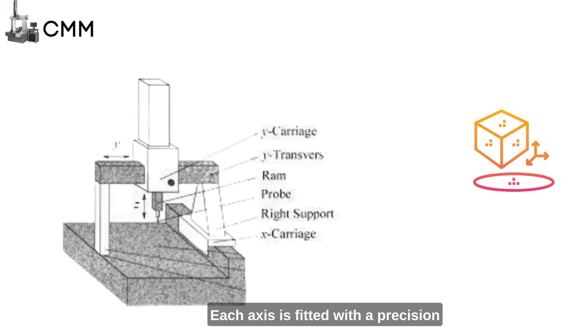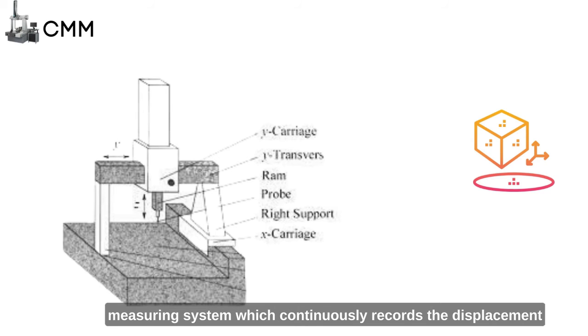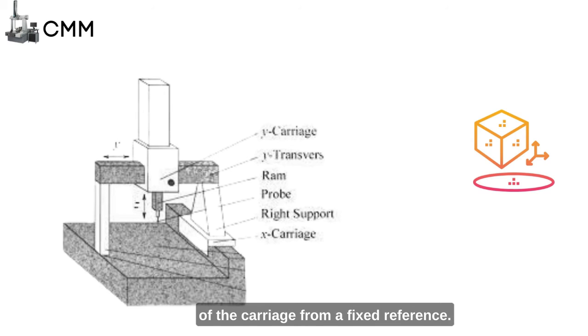Each axis is fitted with a precision measuring system, which continuously records the displacement of the carriage from a fixed reference. The third axis carries a probe. When the probe makes contact with the workpiece, the computer captures the displacement of all three axes.